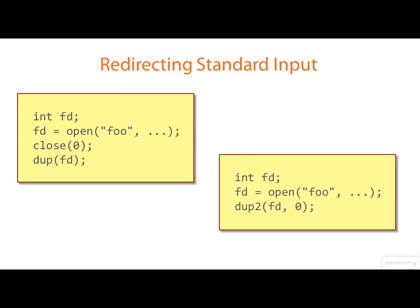Using dup2 is slightly easier because we don't need to explicitly close descriptor zero first. We just dup the file descriptor onto standard input descriptor zero, but the net result is exactly the same.